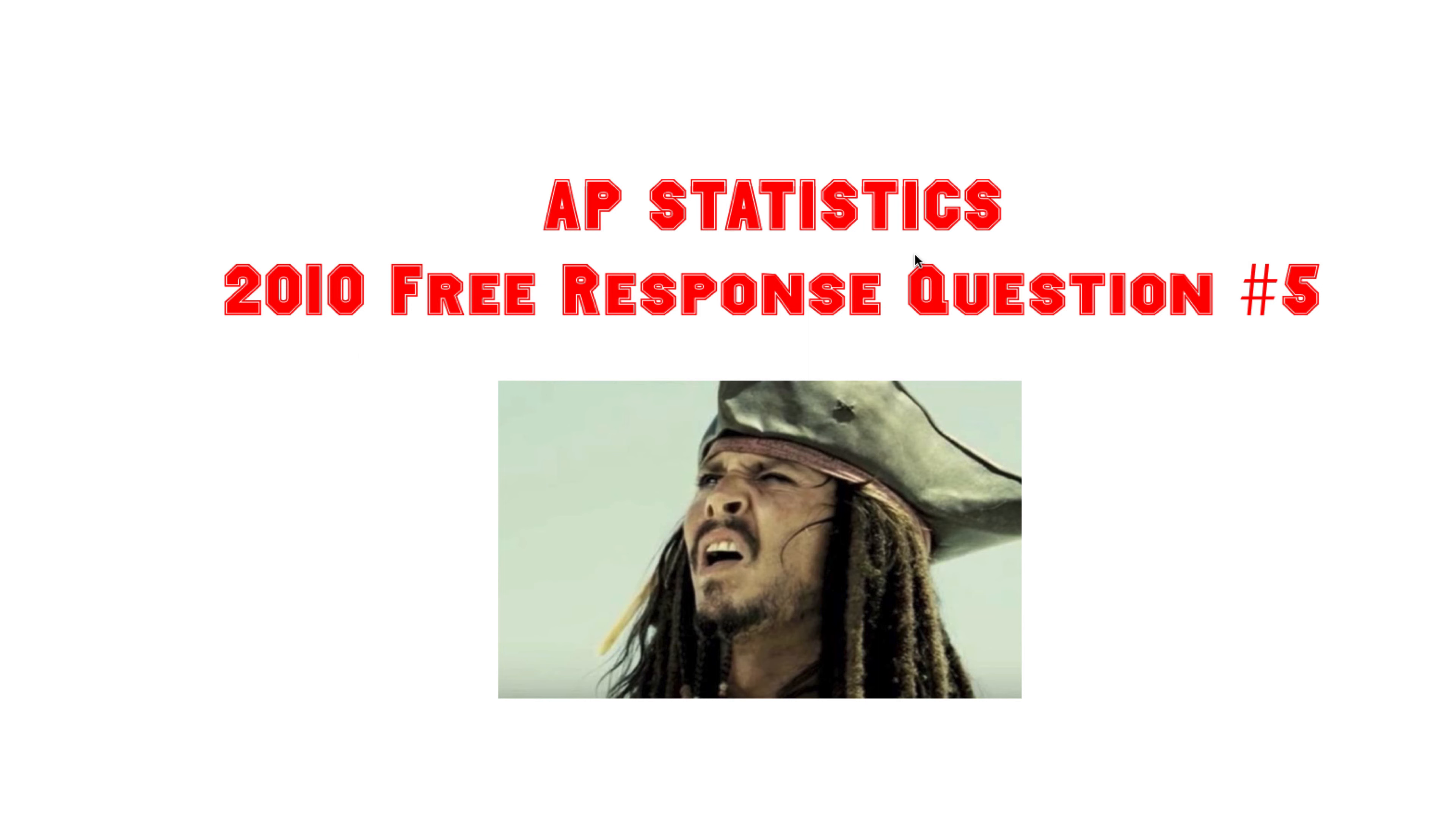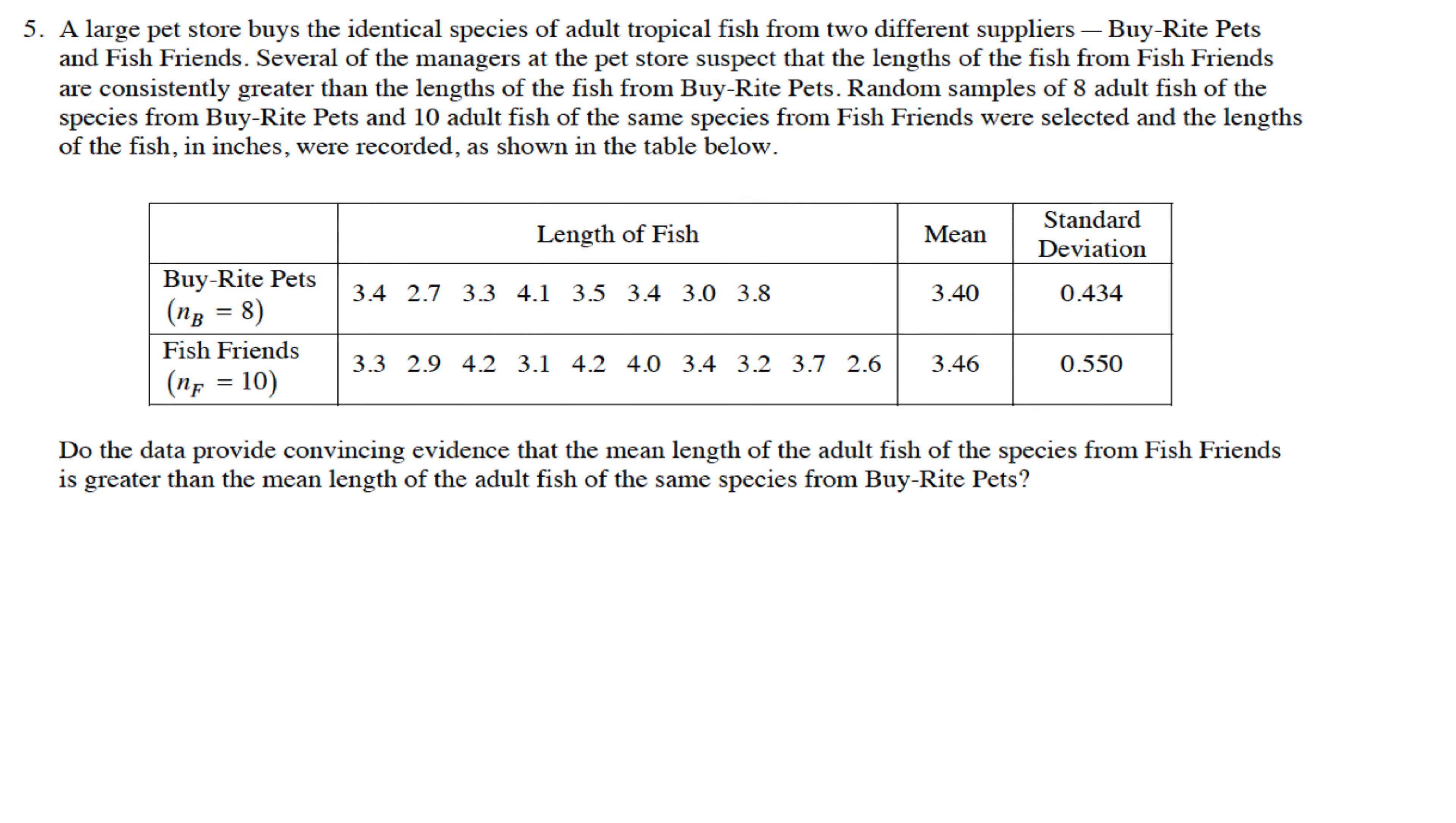So here we are, number five from 2010 AP Stats FRQ. Let's take a look at this. It's a significance test that we need to do. If you need the hard copy, you can just Google 2010 FRQ AP Stats. I'll give you some time to read the question. Basically, you're buying fish from two different places.